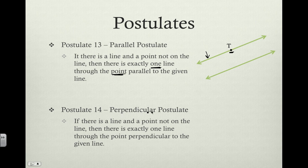Similarly, we have the perpendicular postulate, very similar to the parallel postulate. It says, again, if there is a line and a point not on that line, then there is exactly one line through the point that is going to be perpendicular to that given line.